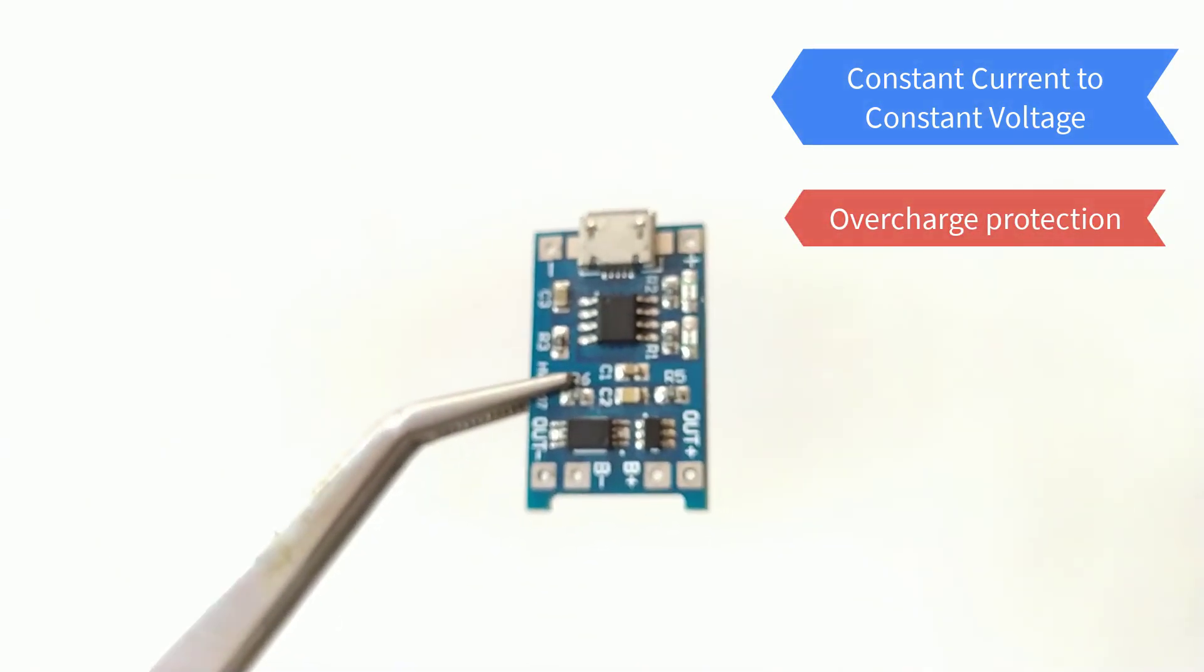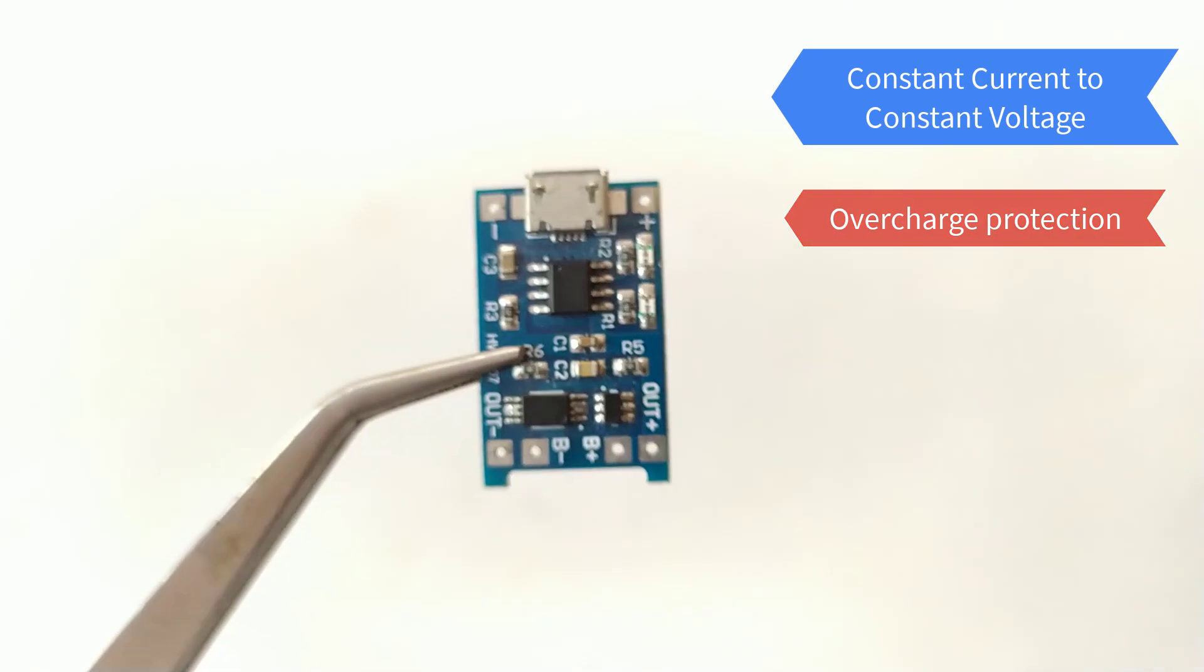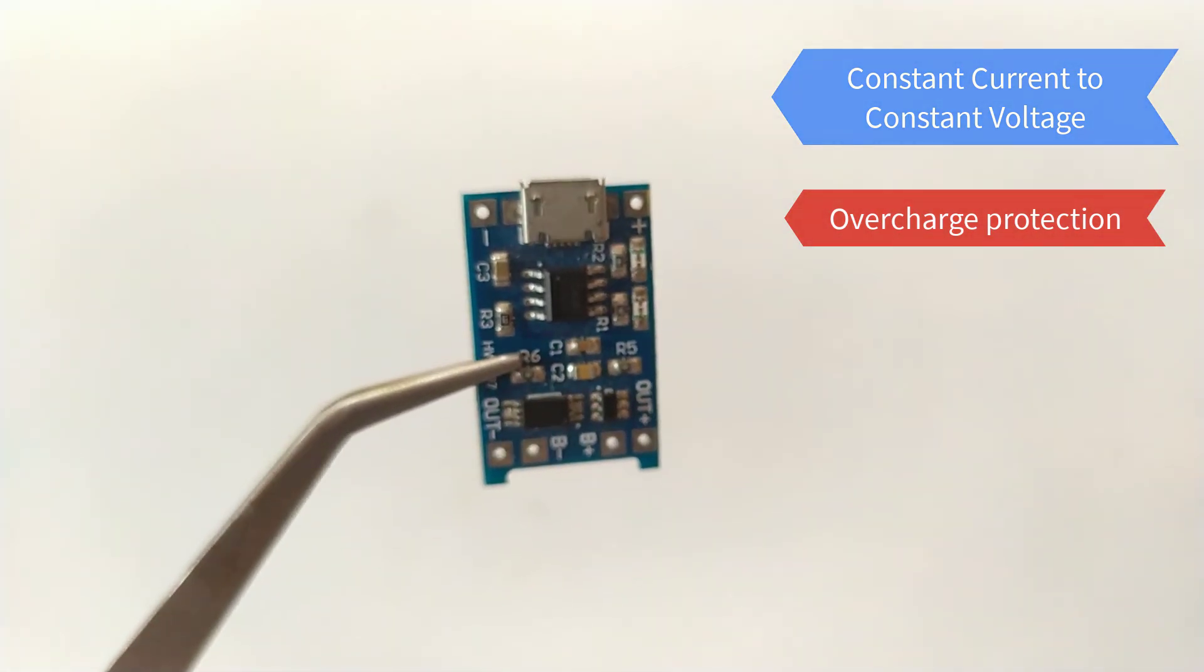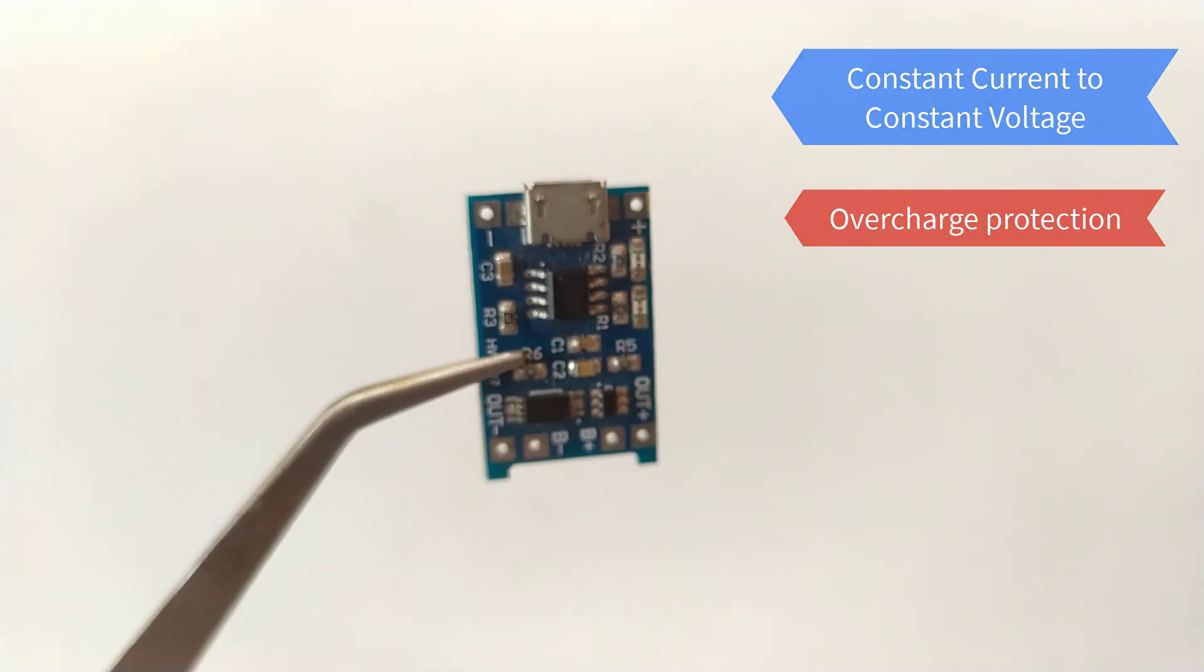Overcharge protection. The module will safely charge your battery to 4.2 volts. 4.2 volts is the healthy maximum voltage level for your battery.